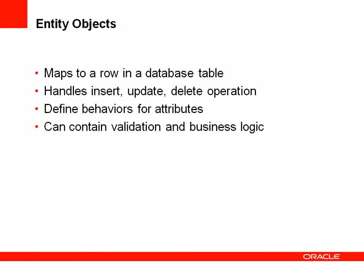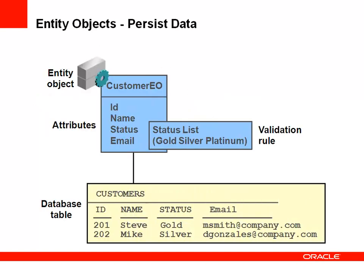An entity object maps to a row in the database table. It consists of attributes that map to columns, and handles insert, update, and delete operations. The entity object is also where you define behaviors for attributes and all sorts of validation. When you create an entity object, you map the table's columns to specific attributes, and you can add validation rules to those attributes as well as at the entity level.